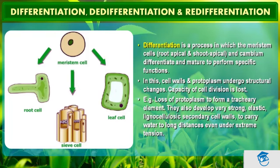For example, to form tracheary elements, the cells lose their protoplasm. They also develop a very strong elastic lignocellulosic secondary cell wall to carry water over long distances even under extreme tension. This is an adaptation — when a plant is under extreme tension, it forms this strong secondary cell wall. This concludes the topic of differentiation.